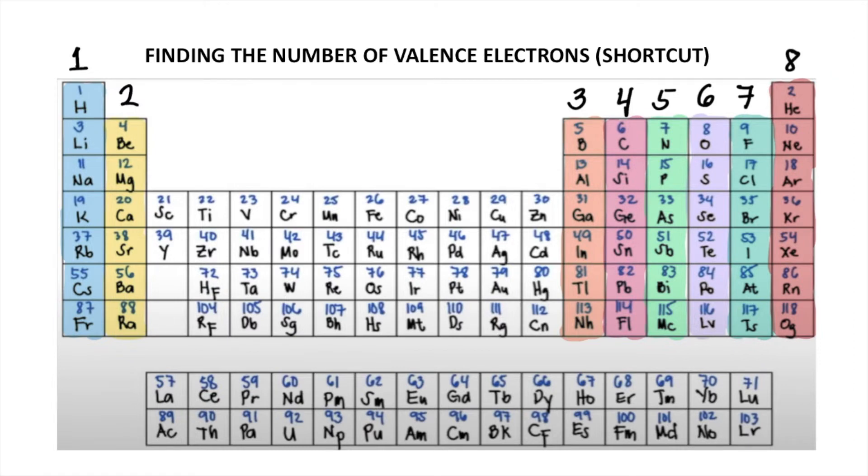So as you can see on your screen, we have here a periodic table, and you will notice that some of the columns have colors and they are numbered from 1 to 8. Now I want you to keep in mind that this shortcut I will be teaching you will only work for the elements from columns 1 to 8. So this shortcut will not work for the elements in the middle or the elements in the lower block.